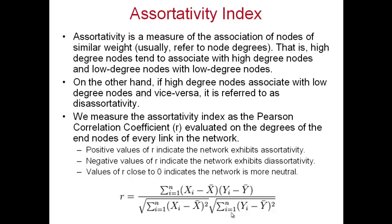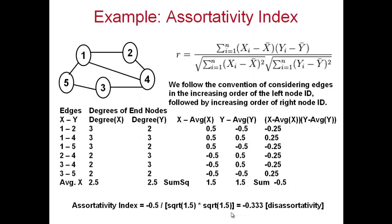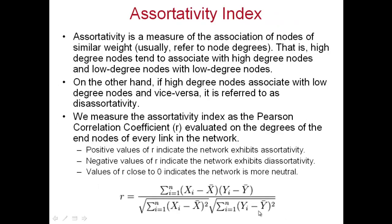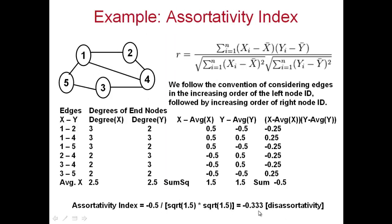You may have seen the correlation coefficient — this is called Pearson's correlation coefficient — in statistics, math, or some other computing class. Let us go through the calculation in detail to make sure everybody gets it. This is the formula. We are going to plug in the numbers and compute the correlation coefficient. If it comes close to 1, then we can say the end vertices are highly correlated to each other based on the measure you are considering — in this case, degree.